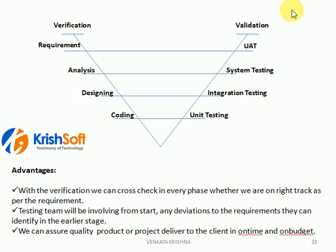The advantages of the VV model: each and everything is cross-checked by the testing team. If the testing team is cross-checking, easily we will identify the gaps in that phase itself. Very less chance will be there to move mistakes from one phase to another phase. Also, testing team involvement from the beginning means deviations in the requirements can be easily identified.